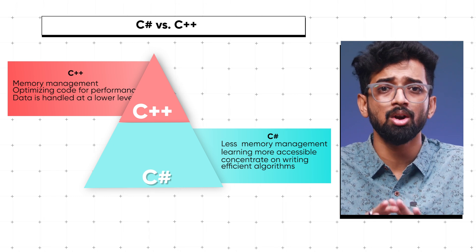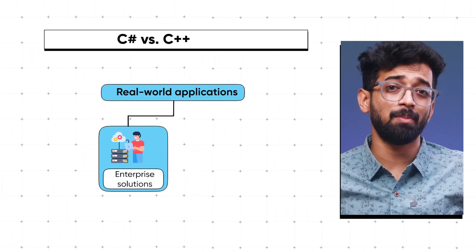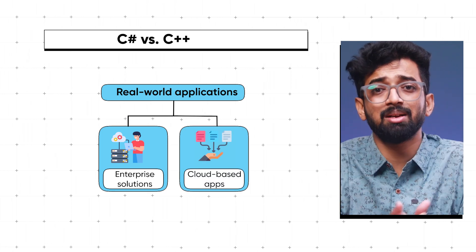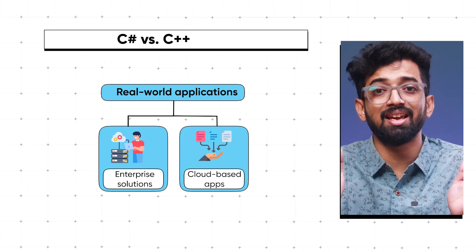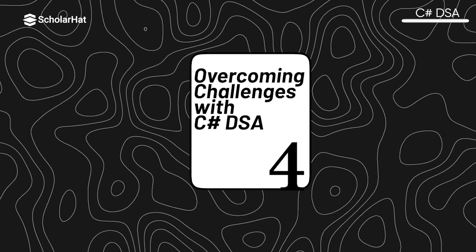Moreover, for real-world applications such as enterprise solutions or cloud-based apps, the productivity benefits of C# often outweigh the performance gains of manual memory management. So while C++ might give you a speed boost, C#'s ease of use and powerful libraries can help you get the job done faster and with fewer headaches.